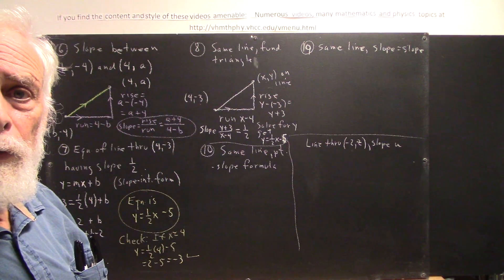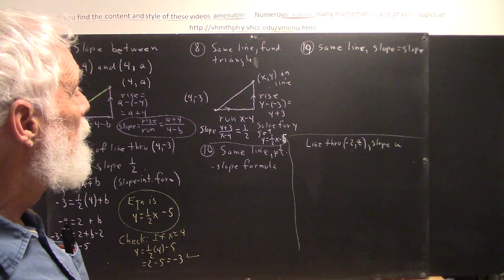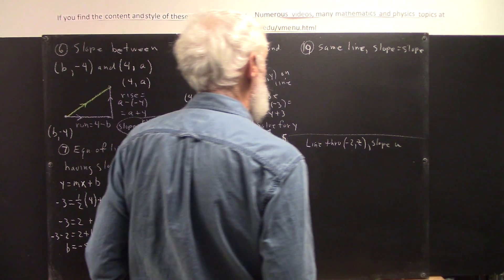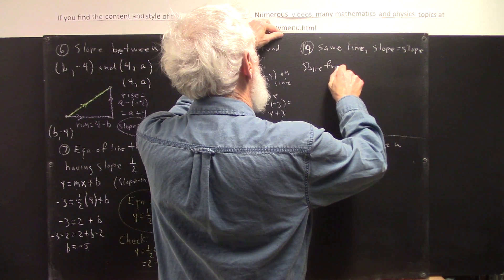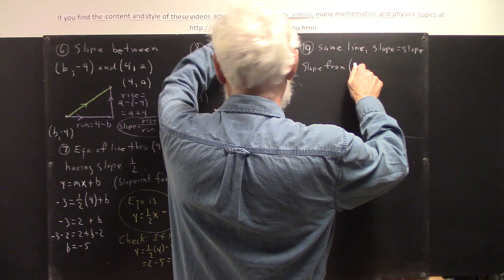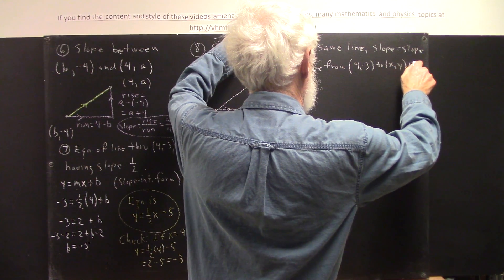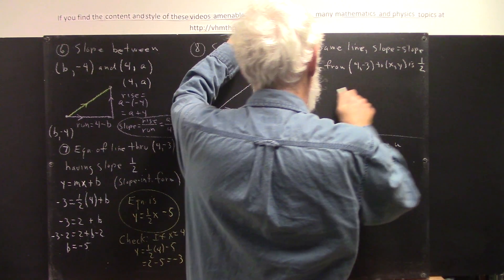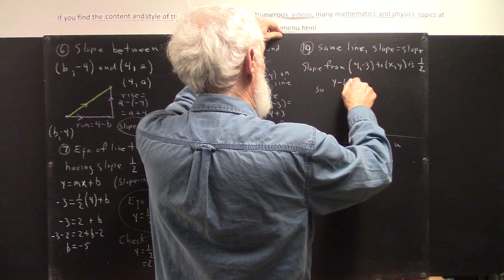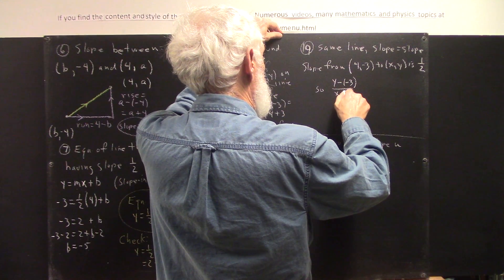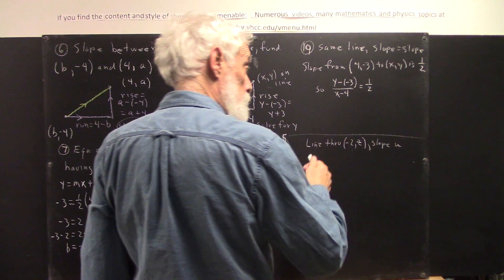Now number 9. We want to do the same line. But we want to just say, okay, this slope equals the slope. Well, this is almost the same as this. I can just say that the slope from what's the point 4 negative 3 to any point x, y on the line is 1 half. So, y minus negative 3 over x minus 4 equals 1 half. And then we do the details of solving.